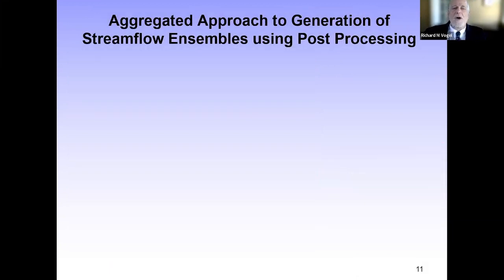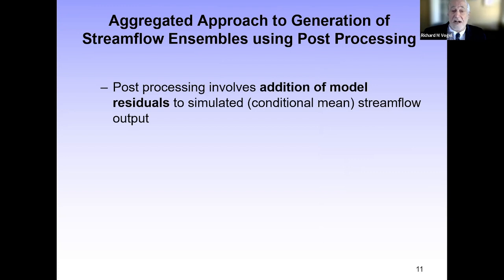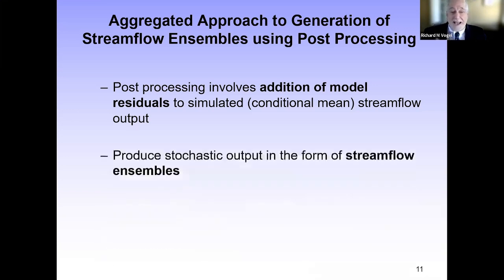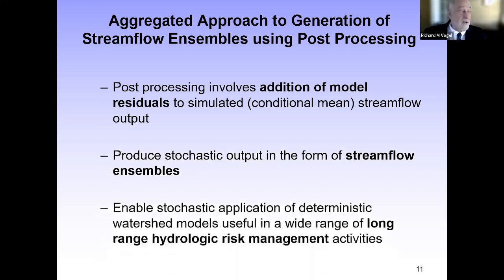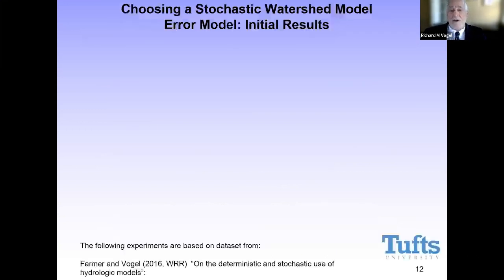We're going to use an aggregated approach to the generation of streamflow ensembles using post-processing. Post-processing involves the reintroduction of the residuals that were used to calibrate the model — adding them back to the conditional mean streamflow output. This can be done repeatedly to generate ensembles, and those ensembles can then be used for risk-based planning across a wide range of activities. In order to do this, we first have to build a stochastic model of the watershed model error.